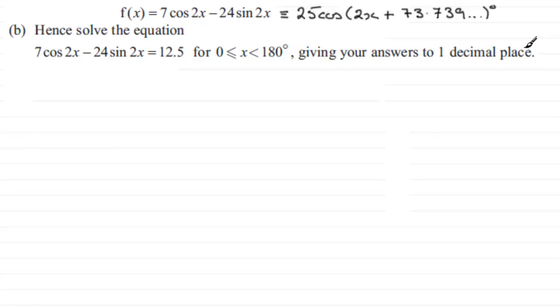Now it did actually say hence solve the equation, because in the previous part we found out that 7 cos 2x minus 24 sine 2x was identical to this statement here: 25 times the cosine of 2x plus 73.739 odd degrees.